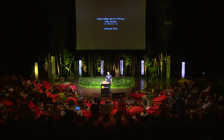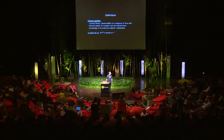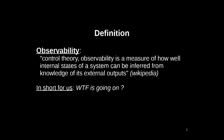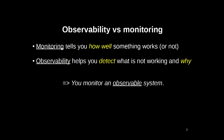So I can be reasonably quick during the presentation. I wanted to give a definition of observability. I found a nice one on Wikipedia, which says that it indicates how well you can guess the internal states of a system when looking at its outputs. In our case, the system is the whole infrastructure, and the outputs are everything available to you, like logs and statistics. The difference between monitoring and observability is that while monitoring tells you how well something works or does not work, observability helps you detect what is not working and why.